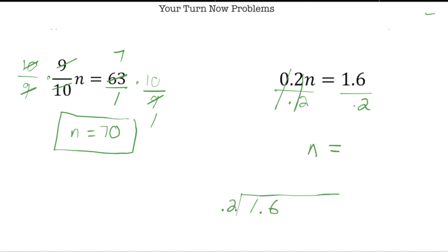Like this. And again, I'm going to move the decimal point one spot to the right and move this decimal one spot to the right. So now we have 16 divided by 2, which we know is 8. So n equals 8. How'd you do?